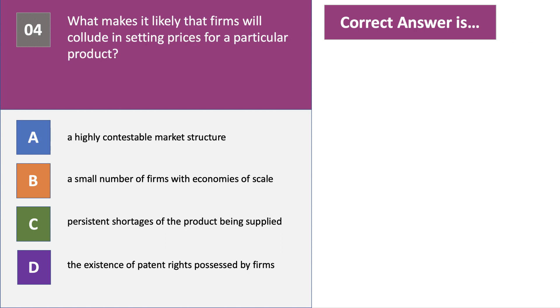Question four. What makes it likely that firms will collude in setting prices for a particular product? Press the pause button please and have a go at question number four.